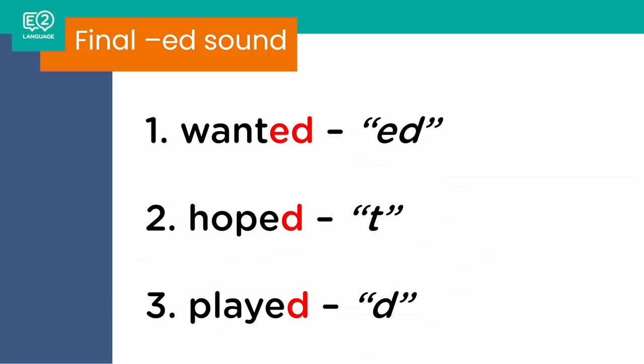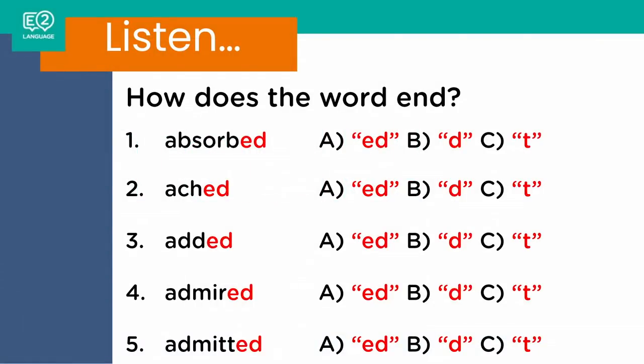So for number one we have 'wanted' — id. For number two we have 'hoped' — t. And for number three we have 'played' — d. Kind of tricky, right? Very subtle to understand or to hear the differences. But trust me, if you are saying these words, which are extremely common, you need to get the ending right. So how do we get it right? Let's do a little task — take out a piece of paper and a pen.